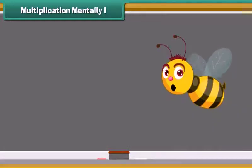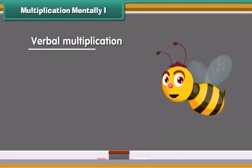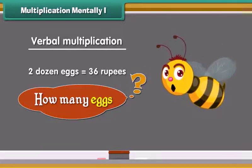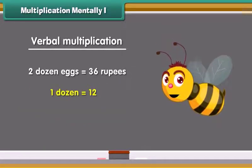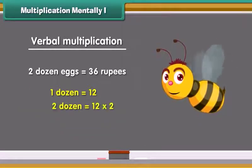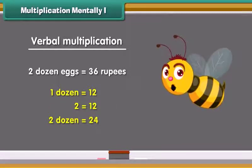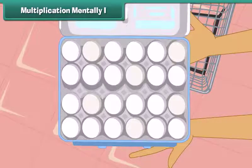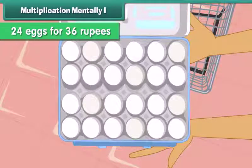Let us look at some examples of verbal multiplication. Jennifer buys 2 dozens of eggs for 36 rupees. How many eggs did she buy? We know 1 dozen equals 12. Therefore, 2 dozen will be equal to 24. Thus, Jennifer bought 24 eggs for 36 rupees.